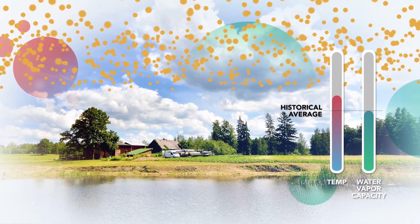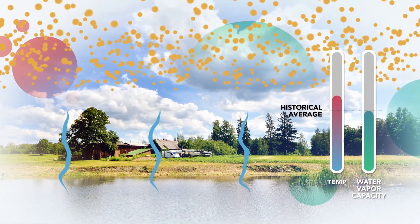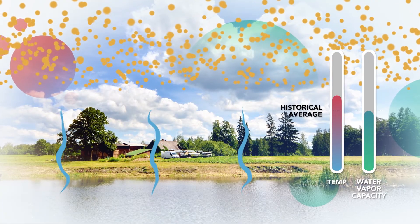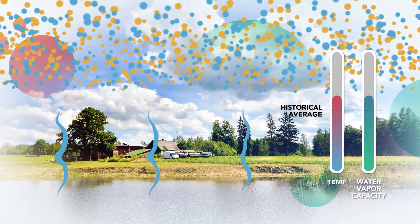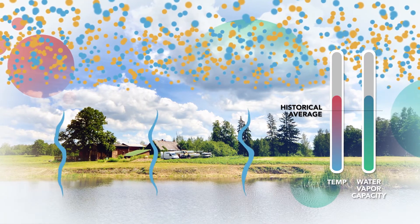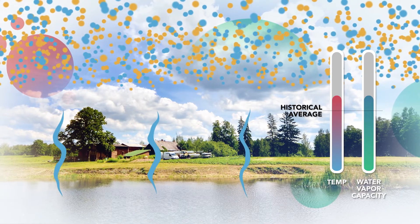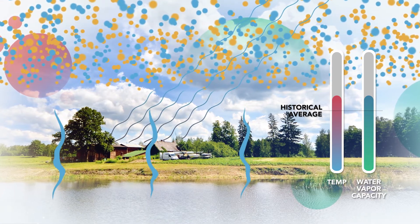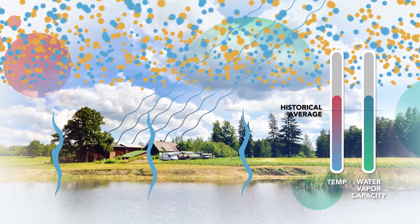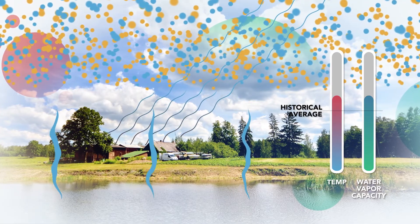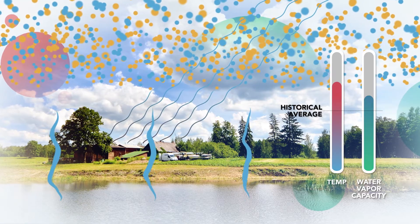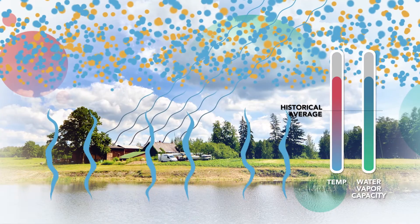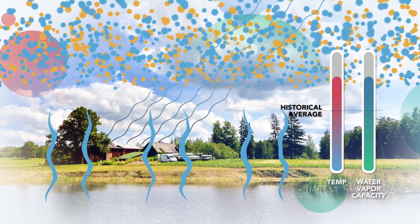In this warmer world, we have more evaporation from the oceans, rivers, and lakes. In addition, the warmer air is able to hold more water vapor. Water vapor is also a greenhouse gas, so more water vapor in the air means less outgoing radiation is able to escape to space and an even larger imbalance in our global energy budget. This imbalance causes temperatures to increase further, so the air can hold even more water vapor, and so on. This is a positive feedback loop.